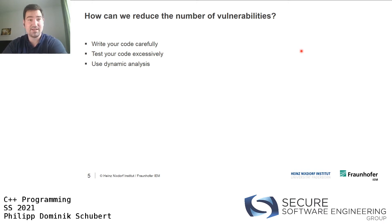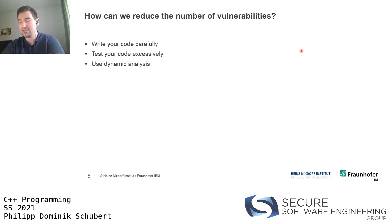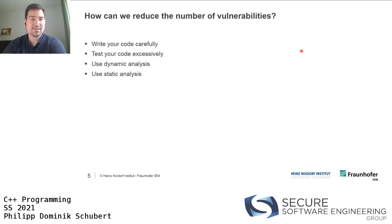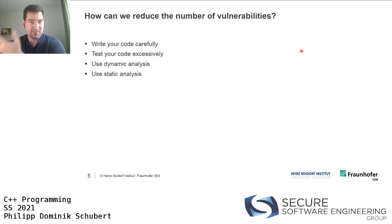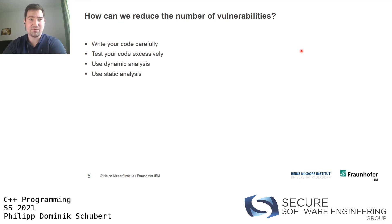Next, you can use dynamic analysis. For instance, you can use the Clang sanitizers or Valgrind to check if your program contains any memory issues or memory leaks. That's pretty cheap and easy to use, and you'll typically find lots of bugs and vulnerabilities. Then there's also static analysis, which we'll talk about in detail in just a few seconds.